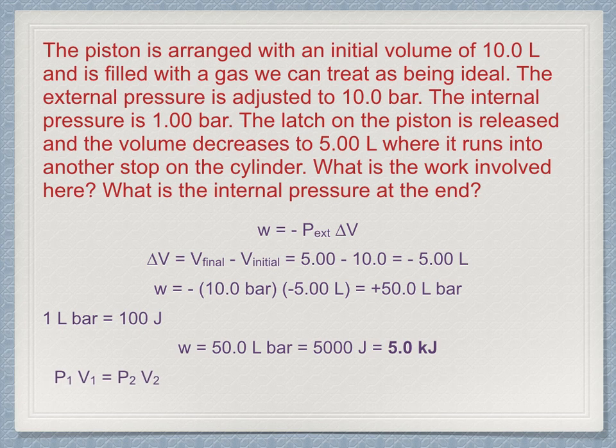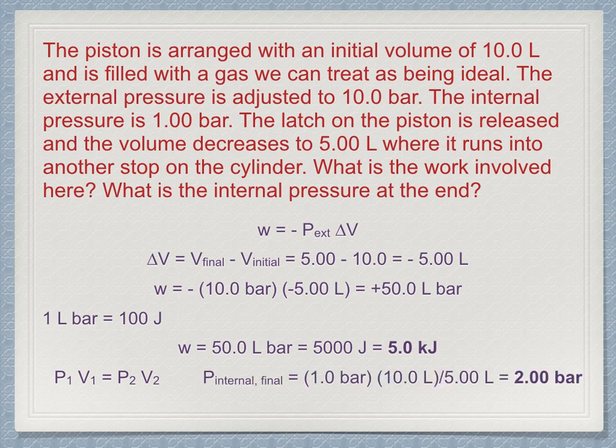P1V1 equals P2V2 is used to find the final internal pressure. Remember to use the internal pressure, not the external pressure. Because the system volume was cut in half, and since it is an ideal gas obeying the ideal gas law, its pressure must have doubled to 2 bar.